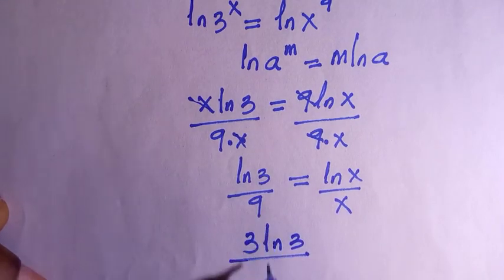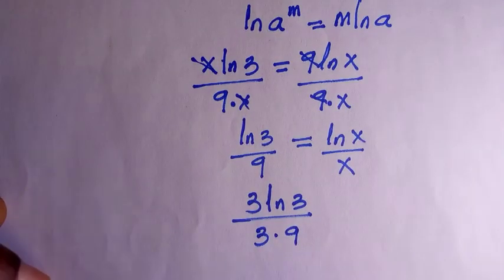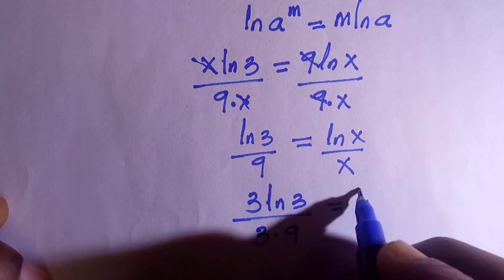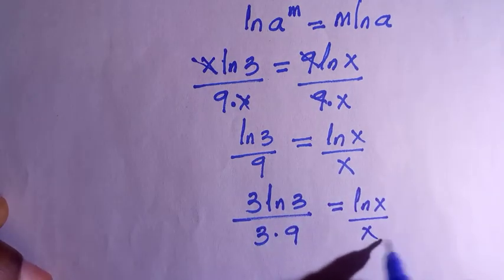We have 3*ln(3), and for the denominator we have 3 multiplying 9. If 3 cancels 3, we still get ln(3) divided by 9, but now we can write this as ln(3^3)/27 equals ln(x)/x.